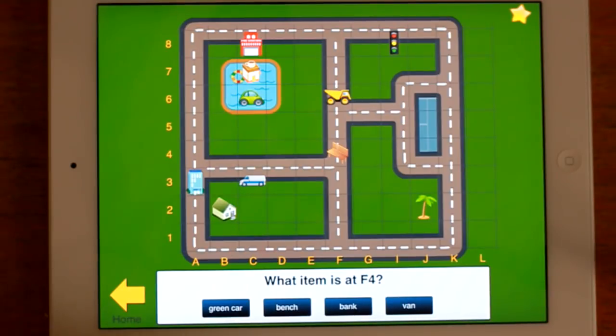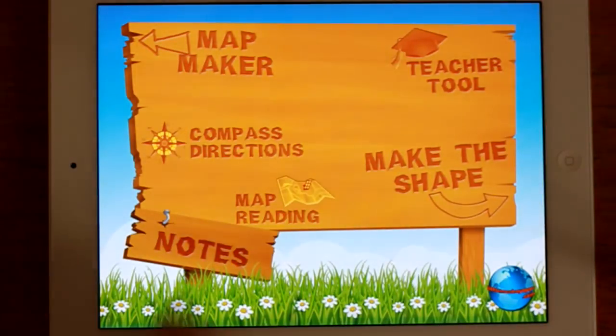What item is at F4? So it asks both ways. F4, the bench. A little bit of reading involved. I didn't mean to do that.